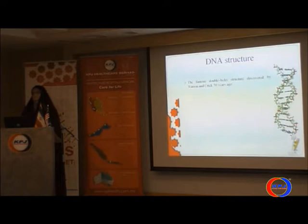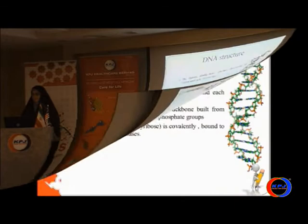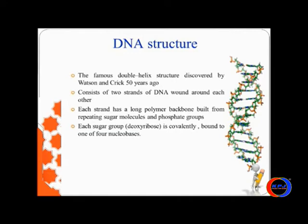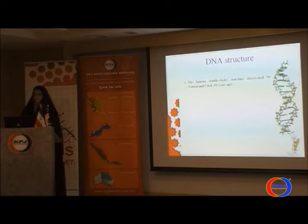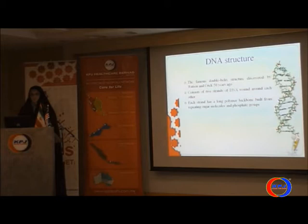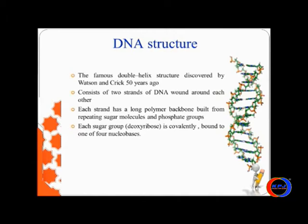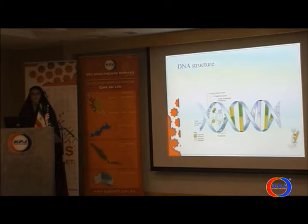Before I explain about my work, I explain about the DNA structure and why DNA is important and can be used as a biological section in our electronic device. The famous double helix structure discovered by Watson and Crick consists of two strands of DNA wound around each other. You can see in this picture the DNA structure. Each strand has a polymer backbone built from repeating sugar molecules and phosphate groups.